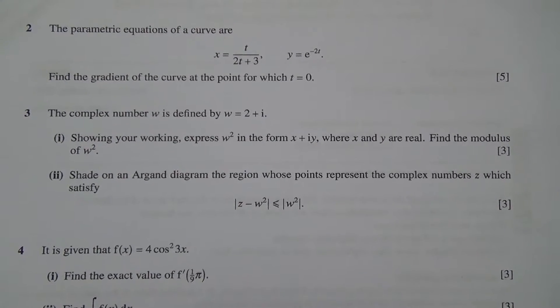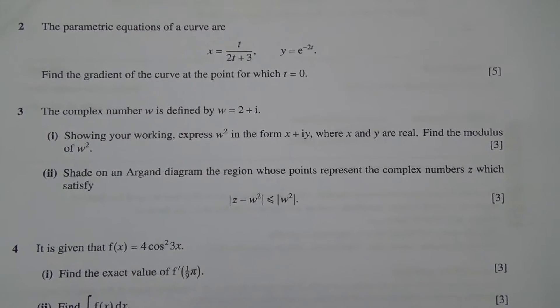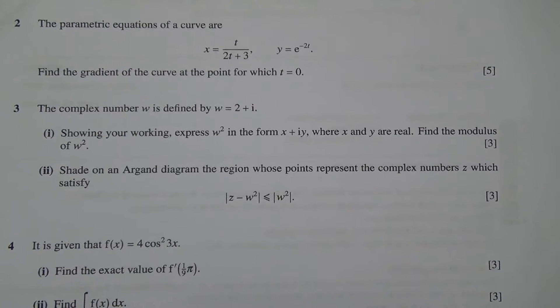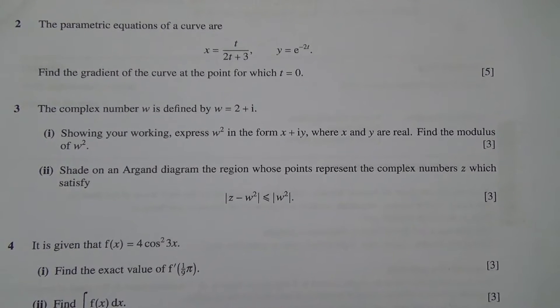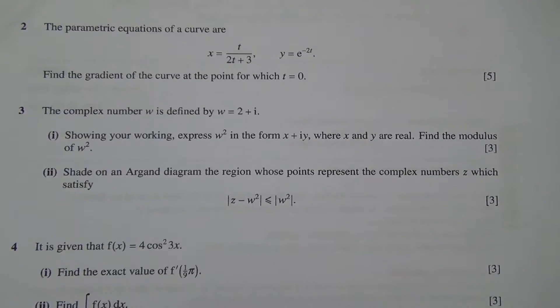For the second part, shade on an Argand diagram the region whose points represent the complex numbers z which satisfy mod of z minus w square less or equal to mod of w square.